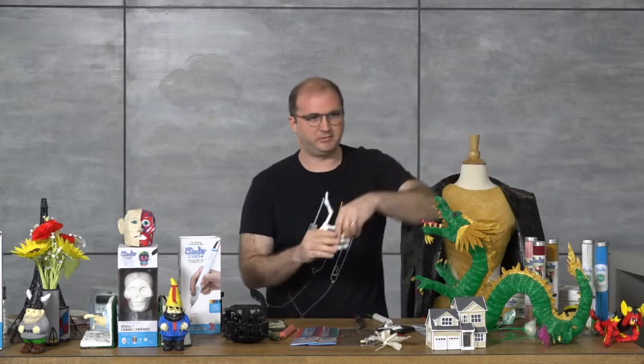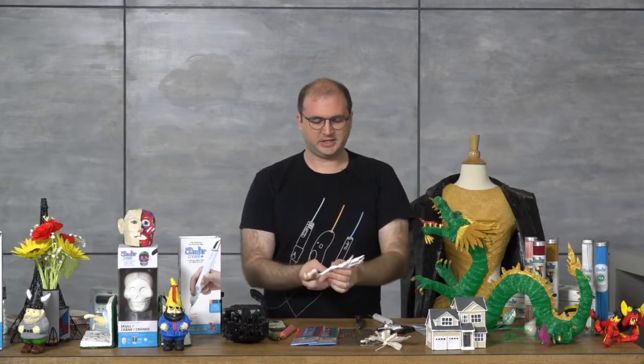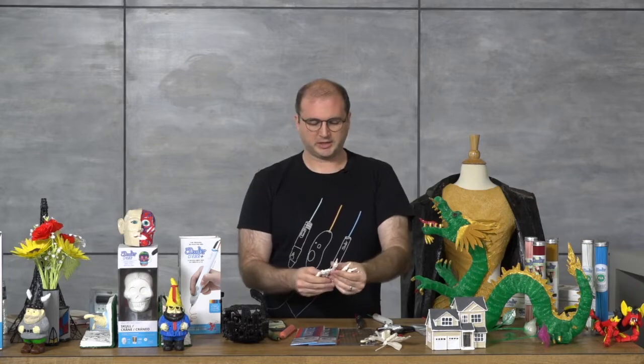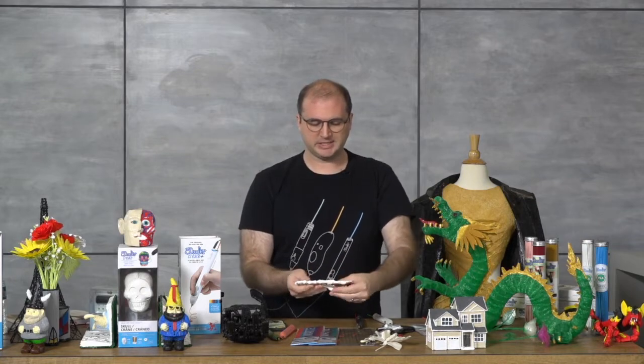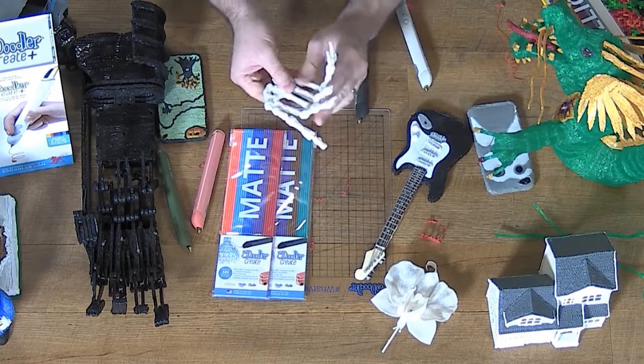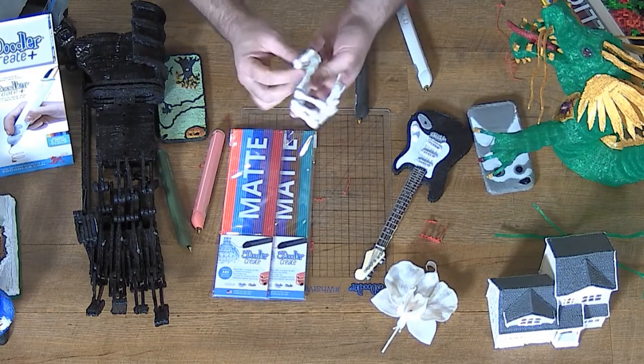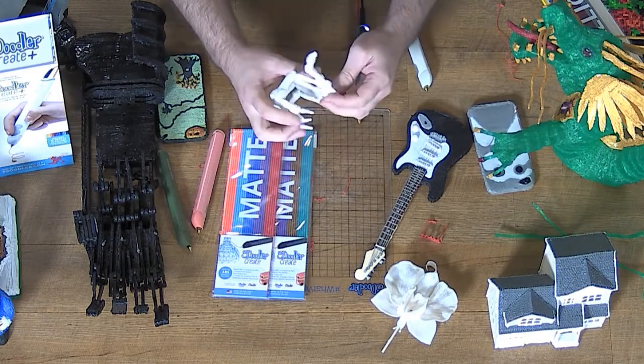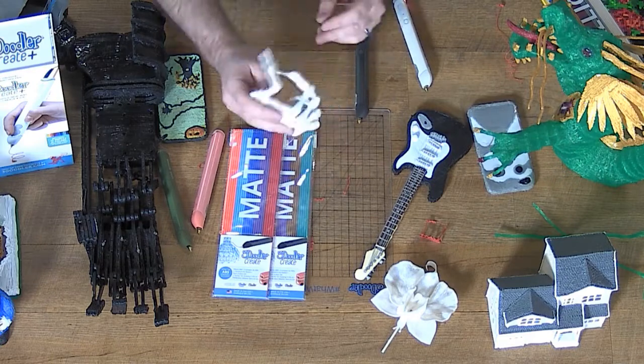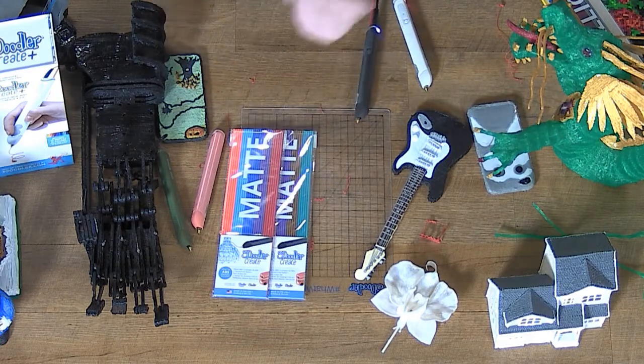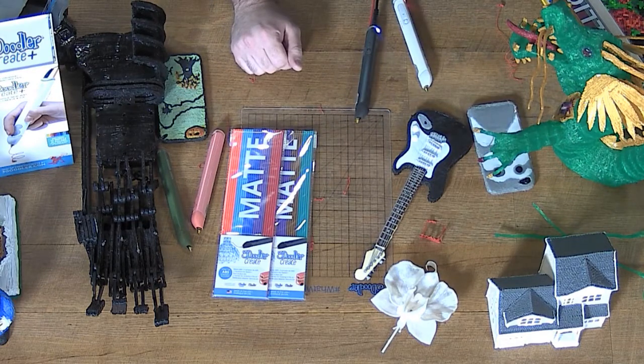Using the 3Doodler to make almost anything, including articulated pieces. So we even have this lovely articulated hand where we actually made the ball joints. Something we'll be releasing later in the fall is a ball joint kit, so you're able to make articulated figures easier than the one described in the book, which is quite nice. But this just makes life significantly easier.